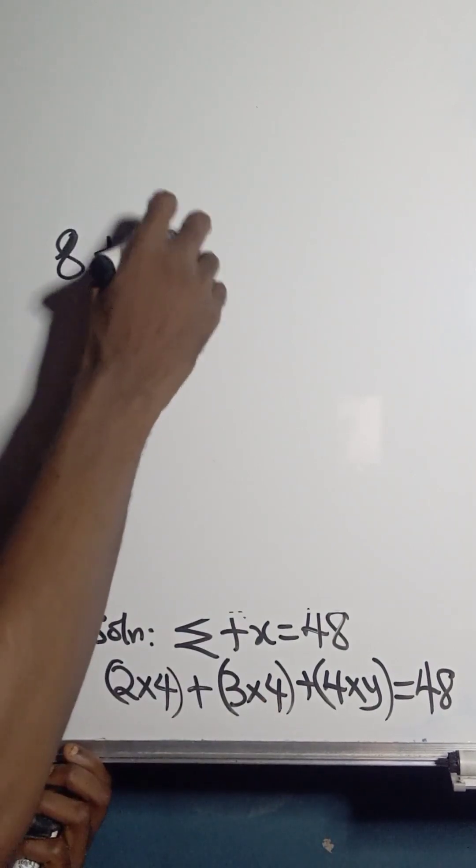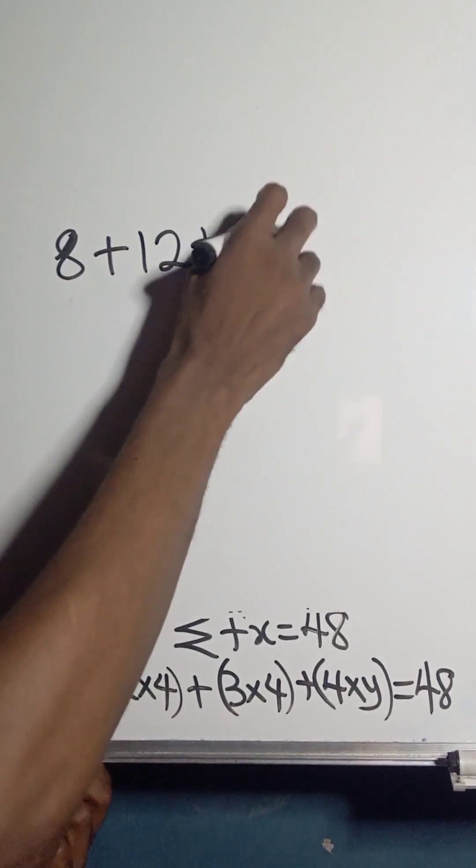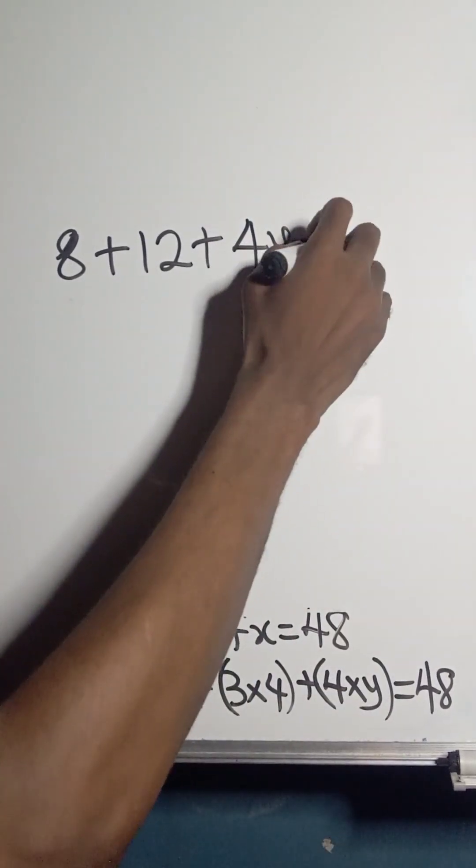So 8 plus 12 gives us 20 plus 4y equals 48.